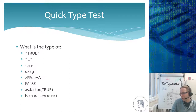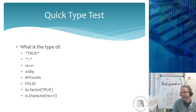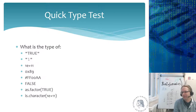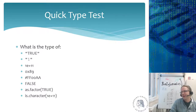The sixth expression: as.factor(TRUE) — what is the type? It is a factor. You take a logical value TRUE and force it to be a factor using as.factor, so it becomes a factor value. The class of the resulting object is factor.